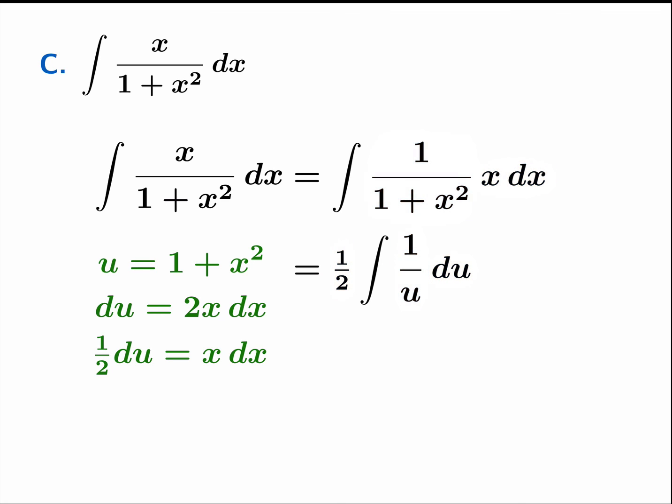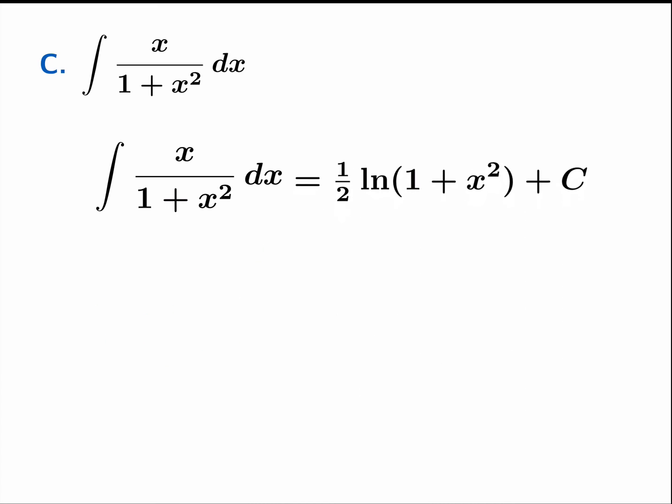Now we're good to go with the actual antiderivative. So antiderivative of 1 over u is ln of absolute value of u. And after back substituting, we obtain 1 half ln 1 plus x squared plus c. By the way, where did the absolute value bars go? Since 1 plus x squared is always positive, there's no need to put absolute value bars around that expression. So we drop the absolute value bars.